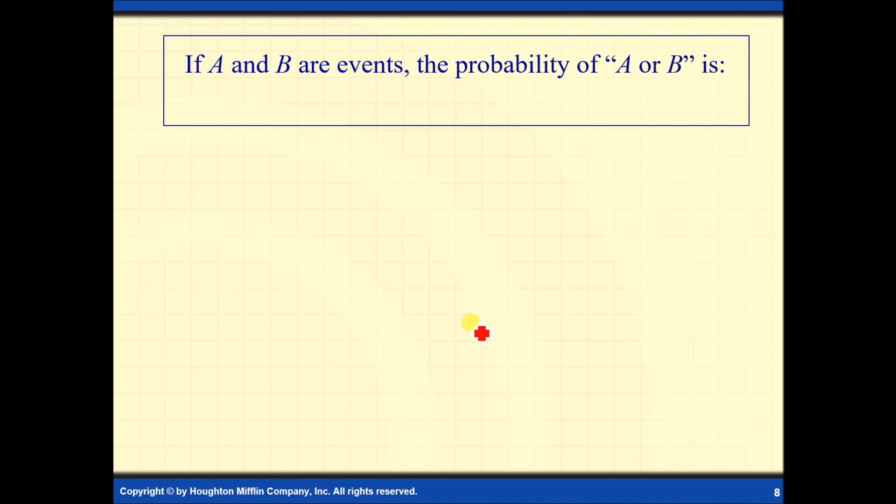We are now going to discuss the union of two events. Let's say if A and B are events, the probability of A or B is denoted by the probability of A union B, which equals the probability of A plus the probability of B minus the probability of A intersection B. Kailangan natin bawasan or tanggalin yung mga common doon sa probability of A at doon sa probability of B.